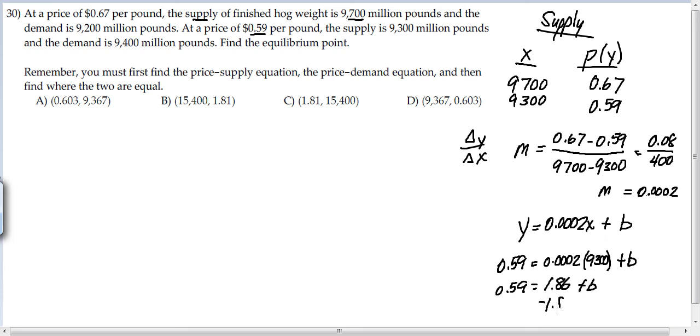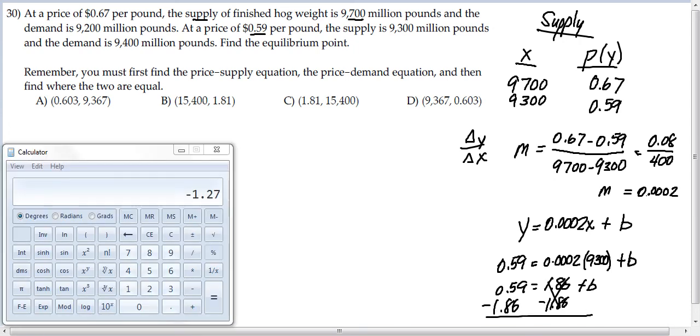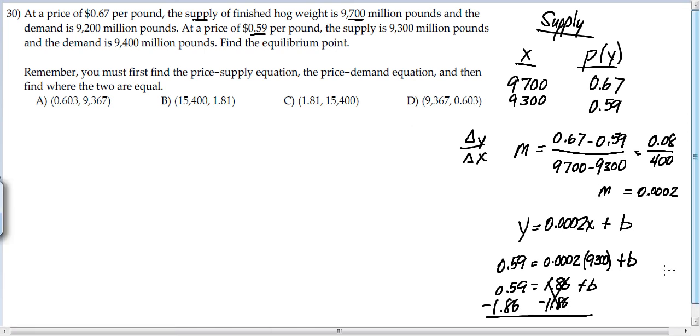And then we take away 1.86 to find B. And then we get my calculator back out. And so B then is negative 1.27. So then I'll come over here. B is negative 1.27. So my supply equation can be written Y equals 0.0002X minus 1.27. So there's the supply.